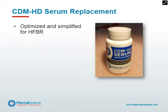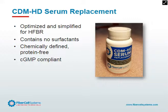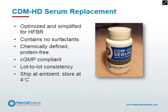CDMHD is optimized and simplified for the hollow fiber bioreactor. Importantly, since the cells do not experience any shear within the system, there's no requirement for surfactants to protect the cell membrane. It's chemically defined and protein-free, with about 92 different components — HEPES to stabilize the pH, extra glucose, a lot of amino acids, and micronutrients. It is cGMP compliant; with proper paperwork and an NDA in place, we can provide information on the components. We can get very high lot-to-lot consistency. It can be shipped at ambient temperature, stored at four degrees, with a three-year shelf life from date of manufacture.